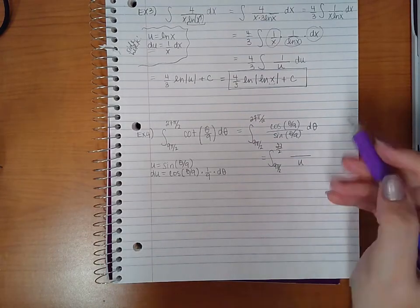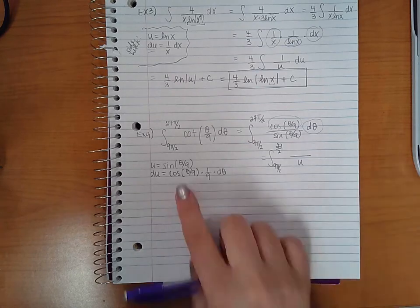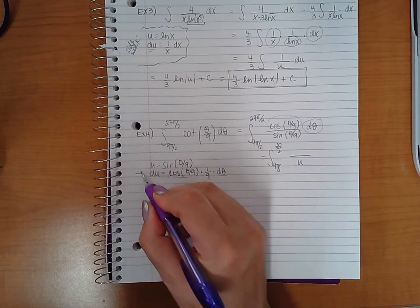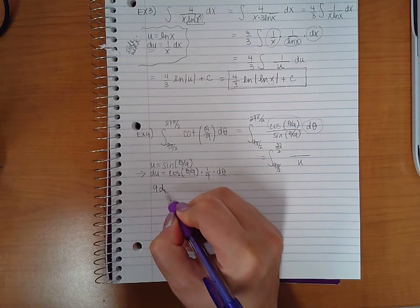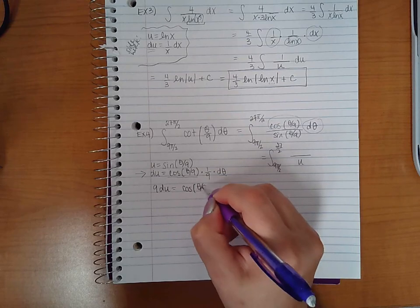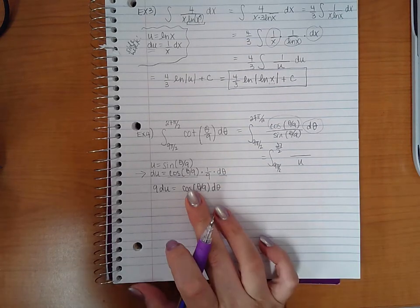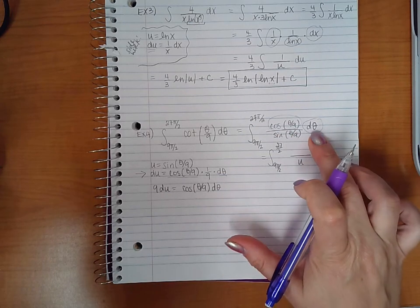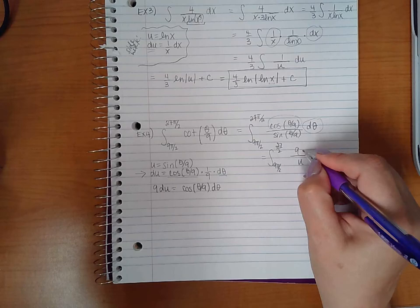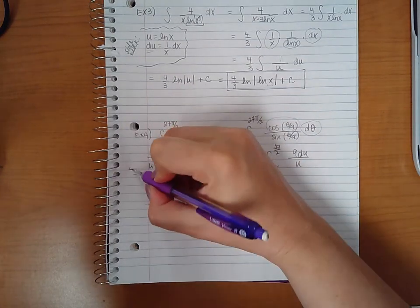But I am going to have this term and this term left over. I do have those here, but I have this extra 1 ninth. So if I multiply this equation by 9 on both sides, I will end up with cosine of theta over 9 d theta. So now I can substitute cosine theta over 9 d theta with 9 du.